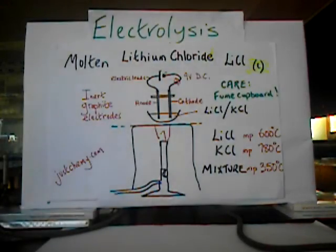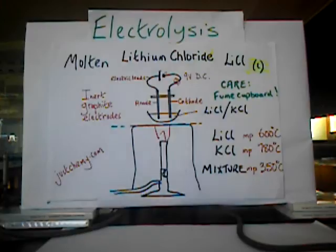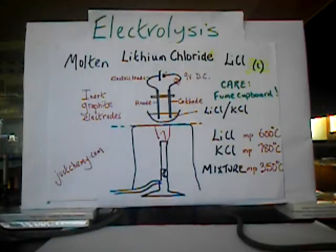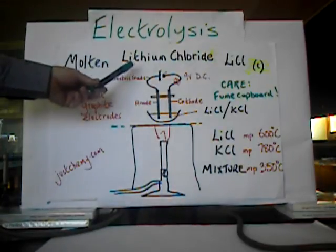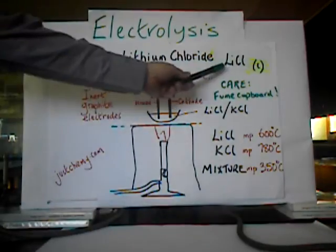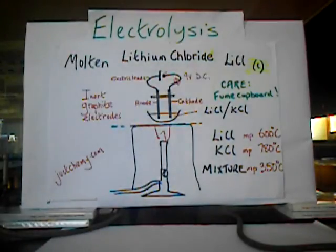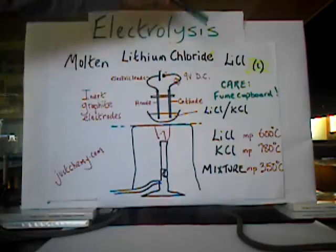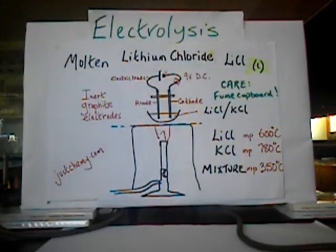Here we take a look at the second electrolysis. We have looked already at the electrolysis of lead bromide in a molten state using inert graphite electrodes. This electrolysis is very similar. We're looking at the electrolysis this time of molten lithium chloride, LiCl. Because we're producing poisonous chlorine gas, this should be carried out in the fume cupboard.